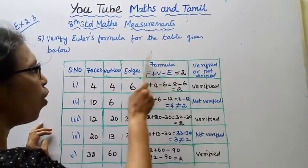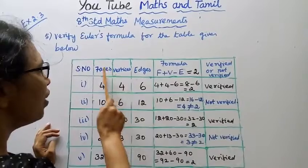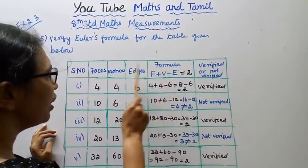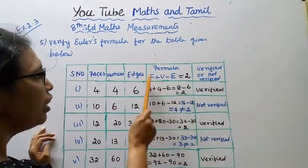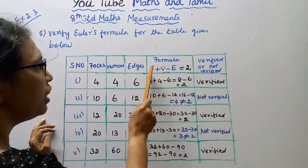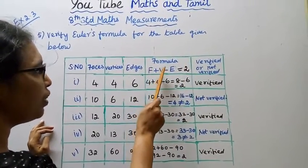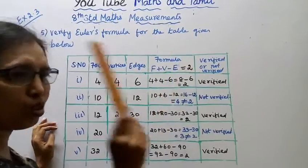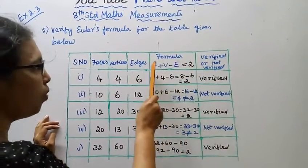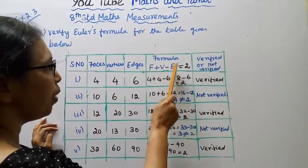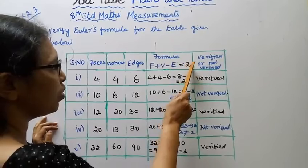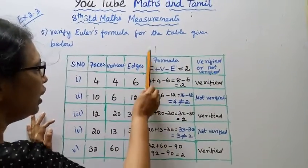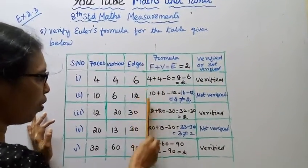The formula: F represents faces, V represents vertices, and E represents edges. The formula is F plus V minus E equals 2. Now we will set up the table columns to verify this formula.